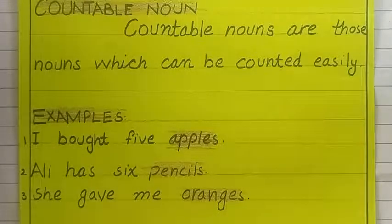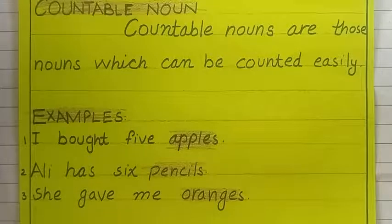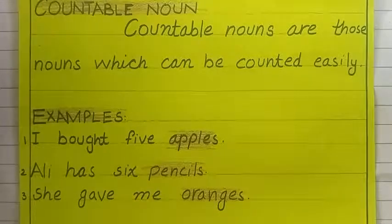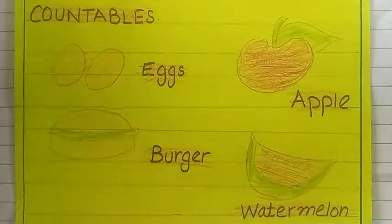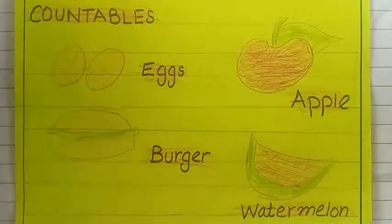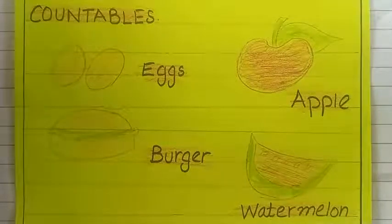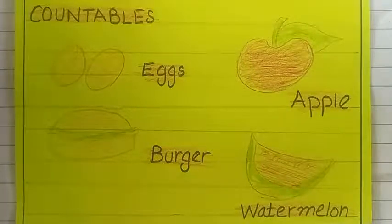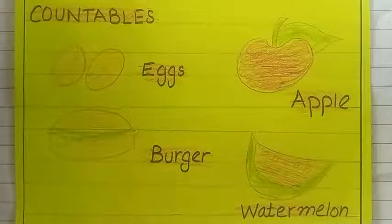'She gave me oranges.' Oranges is also a countable noun. Although the number of oranges is not mentioned here, orange is a countable noun — it can be counted easily. I have made some pictures related to countable nouns: like eggs, eggs can be counted easily; burger, we can easily count burgers; apple, apple can be counted easily; watermelon, it can also be counted easily. So these are countable nouns. Countable nouns are those nouns which can be counted easily.